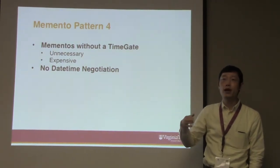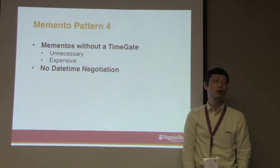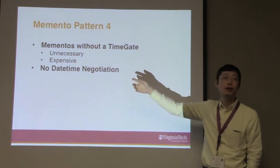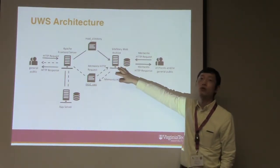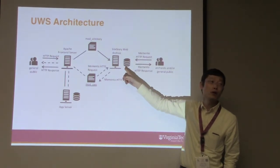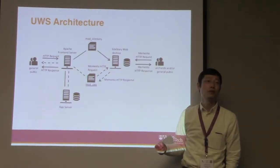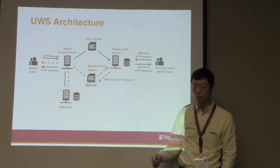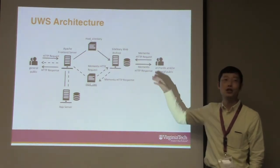We start to think about other ways to deal with this. We look at the Memento protocol — it has datetime negotiation, but it also has a pattern for saying if it's unnecessary or too expensive, you don't even need to do the datetime negotiation. Just go ask for the memento and you'll get it back. We initially think this is the solution, but it's not correct semantically. The SiteStory archive stores all the mementos. This module doesn't know which memento we want — we want the most recent memento, but we don't know its URL or datetime. So there still needs to be a negotiation to determine which is the most recent memento.